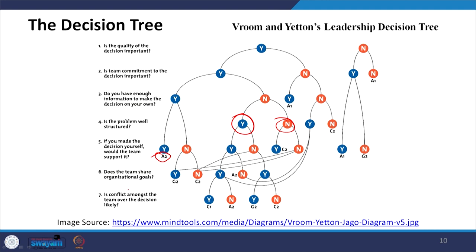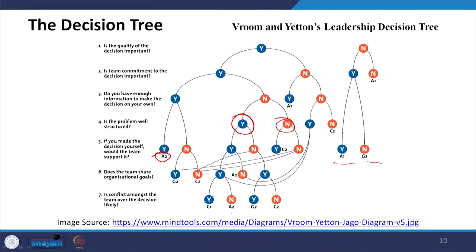On the basis of these parameters with yes and no answers, the decision tree guides you to the appropriate leadership style. When conflict among the team is likely and team support is absent, G2 participative style should be adopted. If conflict is not likely to occur, C2 style of leadership can be adopted for decision making.